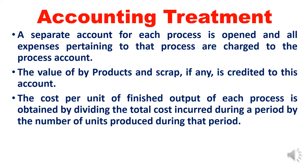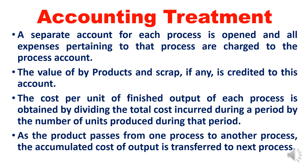The cost per unit of finished output of each process is obtained by dividing the total cost incurred during the period by the number of units produced during that period. The per unit cost formula is: total cost divided by number of units produced. As the product passes from one process to another, the accumulated cost of output is transferred to the next process. So the final product cost is obtained by accumulating all the expenses of processes one, two, and three.